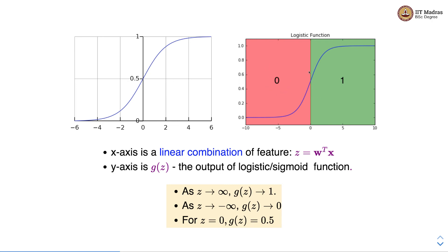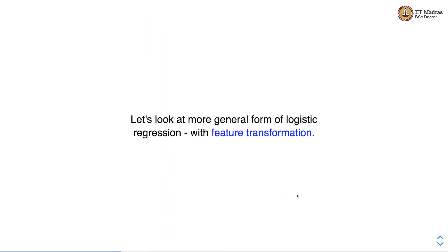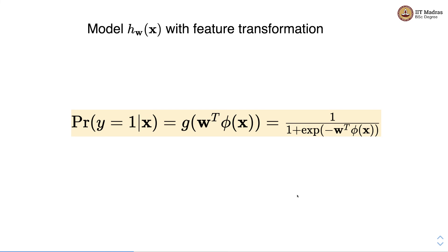Logistic regression learns a linear decision boundary between classes, and we use a probability threshold to assign a sample to a class. Let us look at the more general form of logistic regression with feature transformation. Sometimes we are dealing with a situation where two classes are not linearly separable; instead, there is a non-linear decision boundary between them. In such cases, linear logistic regression is not sufficient to separate those two classes, so we perform feature transformation, represented as phi. One feature transformation that we are all aware of is polynomial feature transformation of a specific degree.